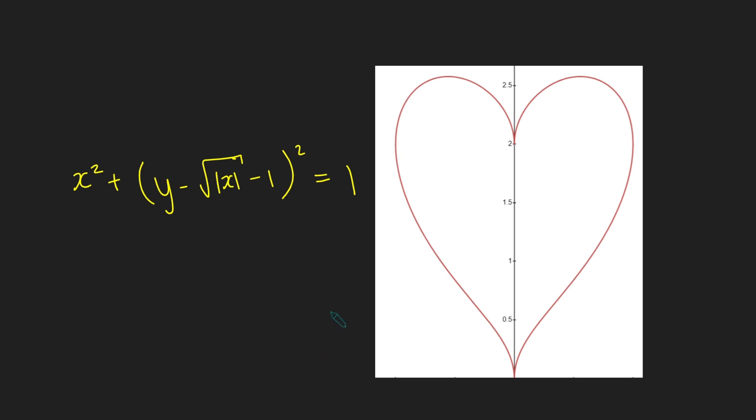Hi, thanks for joining me today. I'm going to be working out the area of this very nice heart shape here, which has this interesting equation: x squared plus y minus root absolute value of x minus 1 all squared equals 1.